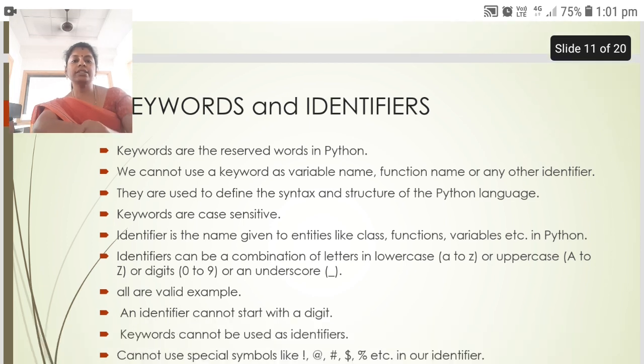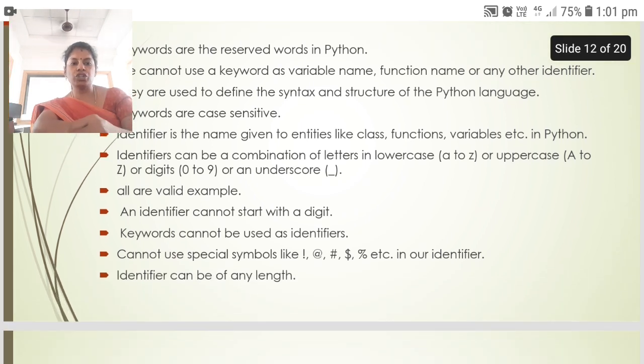Next is keywords and identifiers. Keywords are the reserved words in Python. We cannot use a keyword as a variable name, function name or any other identifier. They are used to define the syntax and the structure of the Python language. Keywords are case sensitive. Identifiers is the name given to entities like class, functions, variables, etc. in Python. Identifiers can be a combination of letters in lower case or uppercase or digits or an underscore. All are valid examples. An identifier cannot start with a digit. Keywords cannot be used as identifiers. Cannot use special symbols like exclamatory, at symbol, hash, dollar, percentage, etc. Identifier can be of any length.